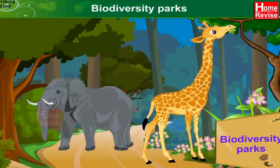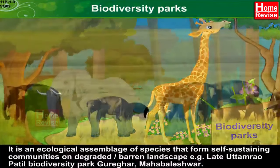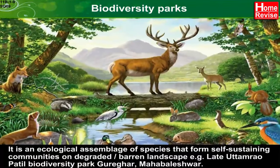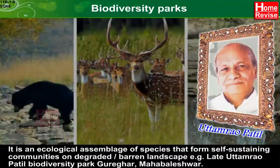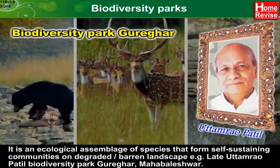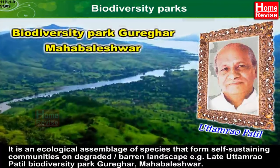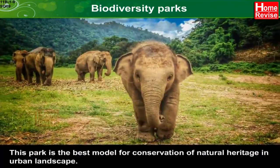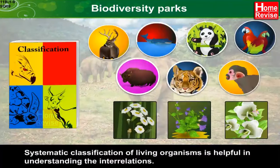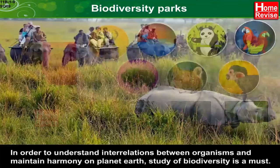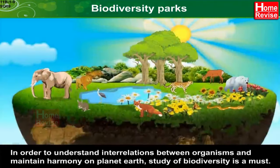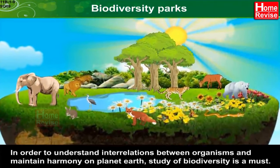Biodiversity Parks: It is an ecological assemblage of species that form self-sustaining communities on degraded or barren landscape — e.g., Late Uttamrao Patil Biodiversity Park, Gureghar, Mahabaleshwar. This park is the best model for conservation of natural heritage in urban landscape. Systematic classification of living organisms is helpful in understanding inter-relations. In order to understand inter-relations between organisms and maintain harmony on Planet Earth, study of biodiversity is a must.